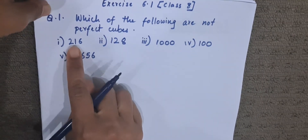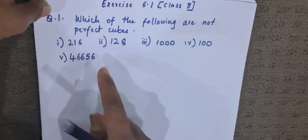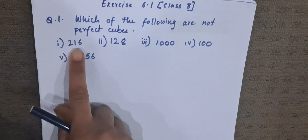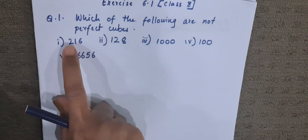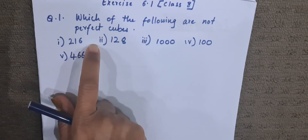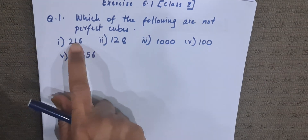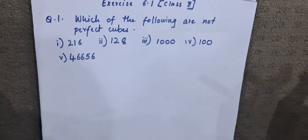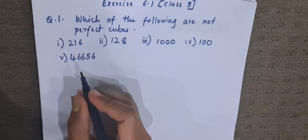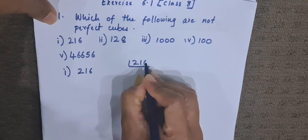What we do is we factorize them by using the prime factorization method and we make a group of three numbers. For example, if 216 is factorized, we get the factors of 216. We make them into a group of three numbers — a pack of three. If we do not find a complete group of three numbers, or a number is left alone, or only two numbers are left without a group of three, then it is not a perfect cube. If all numbers form a group of three, then it is a perfect cube.